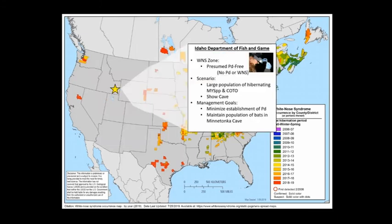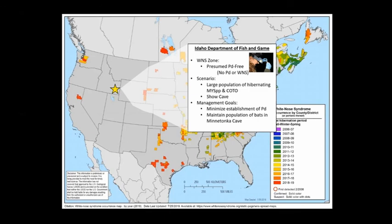We also worked with Rita Dixon from the Idaho Department of Fish and Game, who is in the presumed PD-free zone. She has large populations of hibernating Myotis species as well as Corynorhinus townsendii. Minnetonka Cave gets about 50,000 visitors a year and is a major tourist destination and economic boost for southeastern Idaho. Her management goals were to minimize PD establishment while maintaining bat populations in Minnetonka Cave and keeping the cave open for tourism.